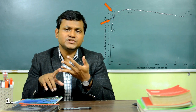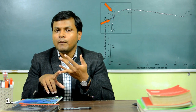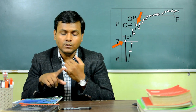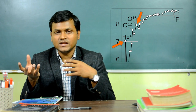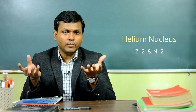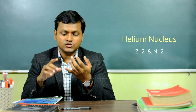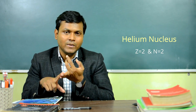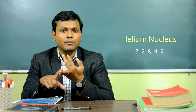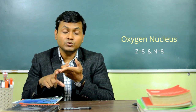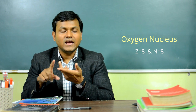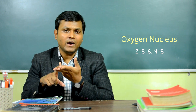Looking at the binding energy curve, helium and oxygen seem to have sharp peaks. Helium has double magic numbers — both the number of protons and the number of neutrons correspond to a magic number. Helium has two neutrons and two protons, so it is a double magic number and has a sharp peak at the binding energy curve. Similarly, oxygen, which also has double magic numbers — eight protons and eight neutrons — has a sharp peak in the binding energy curve.